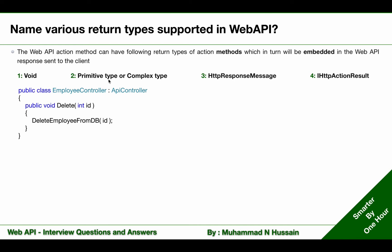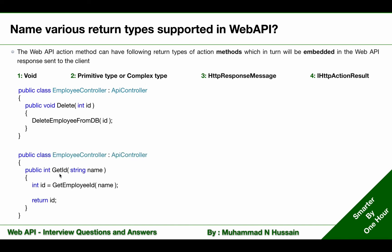Similarly, we can return a primitive type or complex type. In the next example, I have a get method that takes a name as a parameter, retrieves the employee ID by name, and returns that ID which is of type int. Primitive types include int, string, dates, etc.